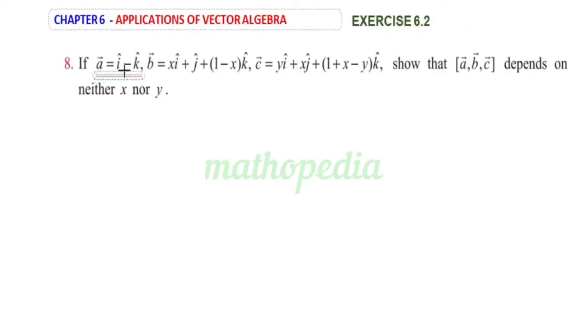Three vectors are given: A vector, B vector, and C vector. We have to show that the box product ABC depends on neither X nor Y.